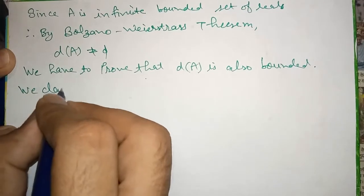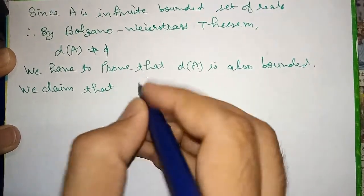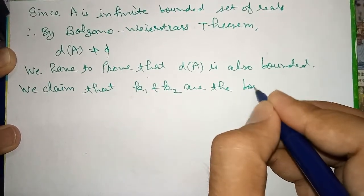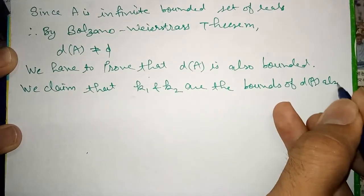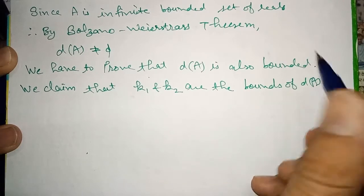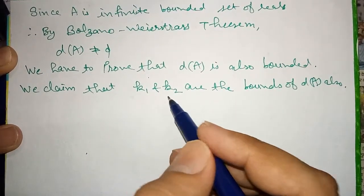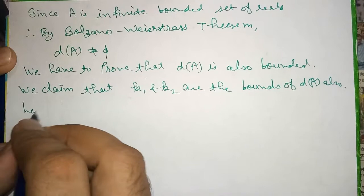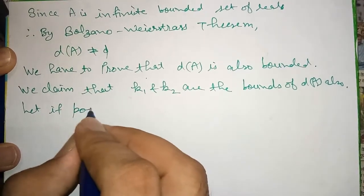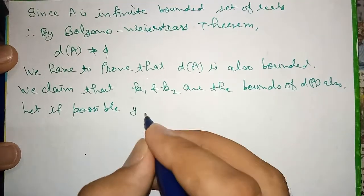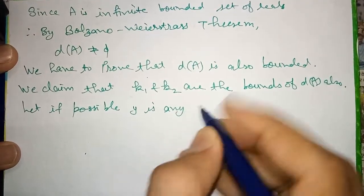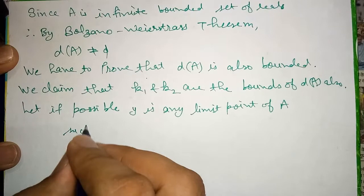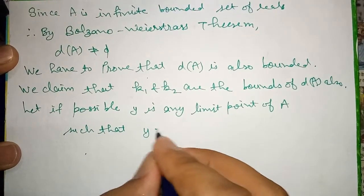We claim that K1 and K2 are the bounds of DA also. For every element of DA — that is, every limit point of A — we claim it lies between K1 and K2. If possible, suppose Y is greater than K2.